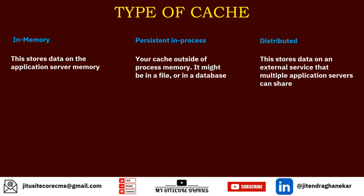The third type is distributed caching — this stores the data in an external service that multiple application servers can share. For example, if you want to store a country dropdown list and you are using it across all your different applications, the data source is in one place and can be shared — that is a distributed cache. These three types describe how the cache is stored.